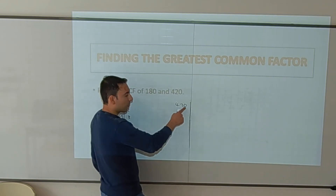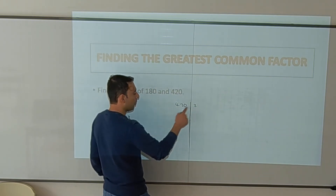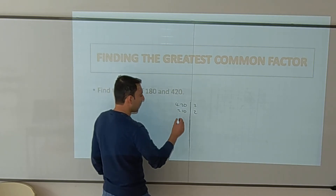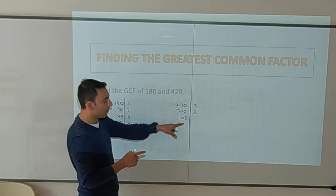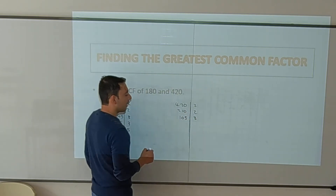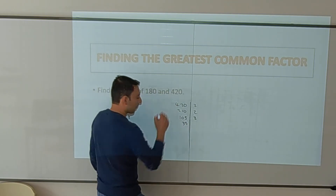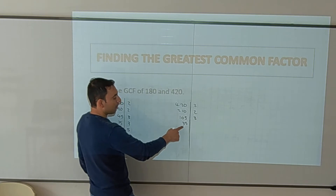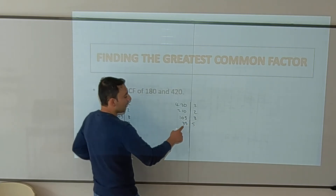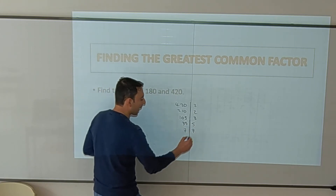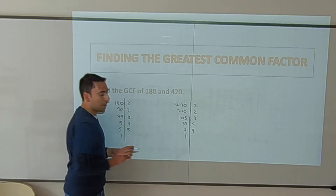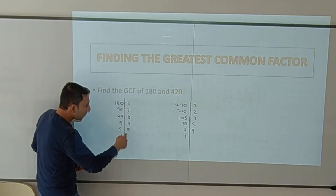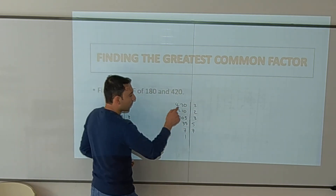Now for 420: it's even, so divide by 2 to get 210. Divide by 2 to get 105. 105 is odd, so not divisible by 2, but divisible by 5: 105 divided by 5 is 35. Then 35 divided by 5 is 7. And 7 divided by 7 is 1. We've finished the prime factorization for 420.